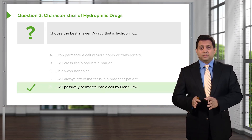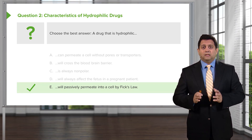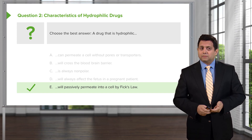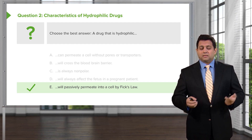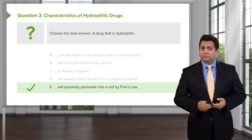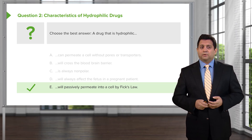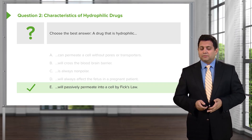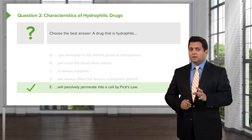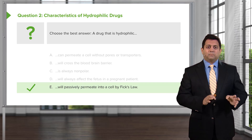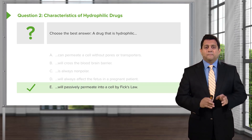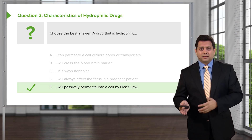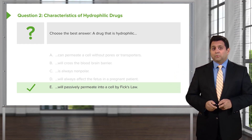The answer is E. All of the other options describe a lipophilic drug — a lipophilic drug permeates a cell without pores or transporters, will cross the blood-brain barrier, often affects a fetus by crossing the blood-uterine barrier, and is almost always nonpolar. All drugs generally will passively permeate into a cell by Fick's law, whether through an open channel or through the membrane. People get this wrong because they assume that a hydrophilic drug can't permeate into a cell — that's not true. A hydrophilic drug can passively permeate through a cell pore.